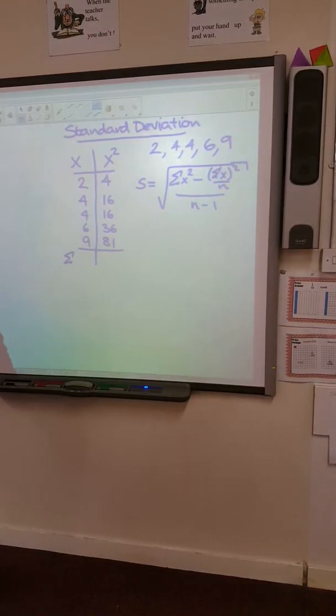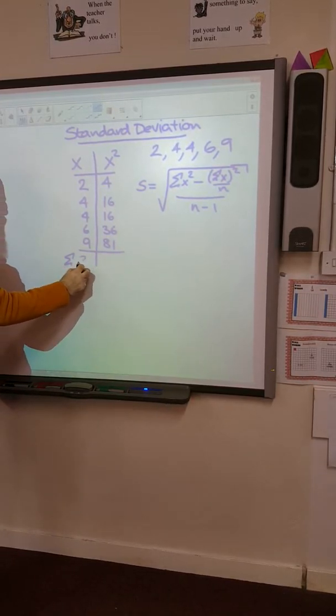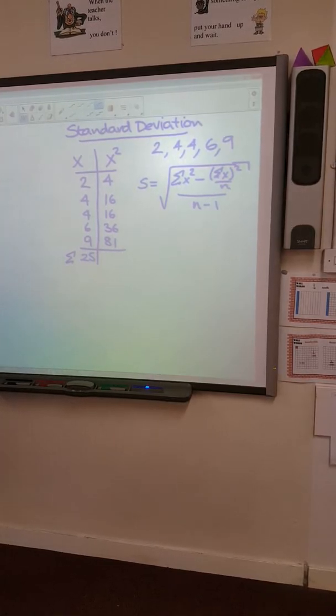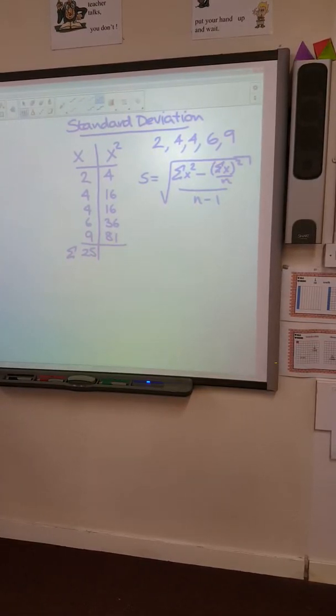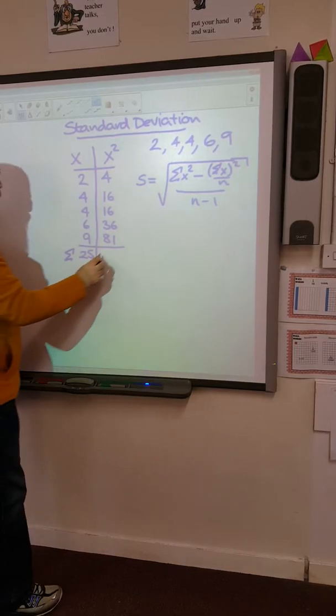We would square these numbers under a column headed x squared, so 4, 16, 16, 36 and 81.